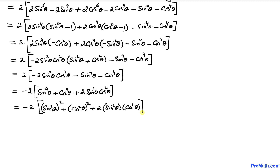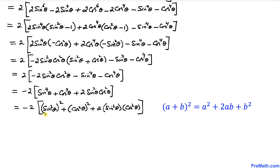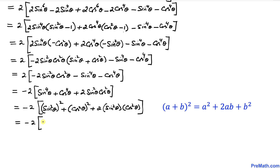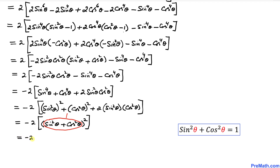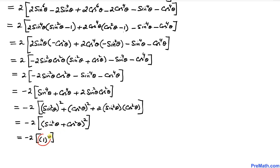We can see that all the terms inside the bracket represent a perfect square using the formula a plus b squared. Therefore I can write it as: negative 2 times, in the bracket, sine squared theta plus cosine squared theta, all squared. Since sine squared theta plus cosine squared theta equals 1, this becomes negative 2 times 1 squared.